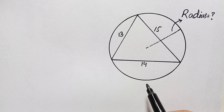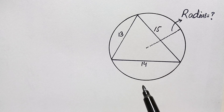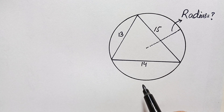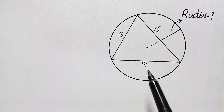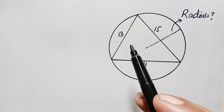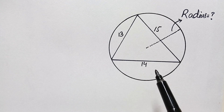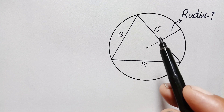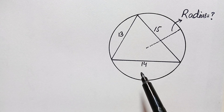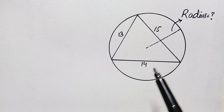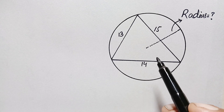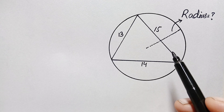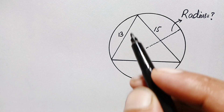Hello everyone, you are welcome. Today we have a nice geometry math problem. We have a circle and there is a scalene triangle inside the circle whose three different side lengths are given. Our target is to find out the radius of this circle. Now how can we solve this math problem?